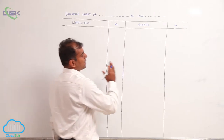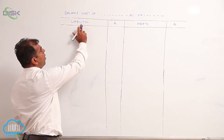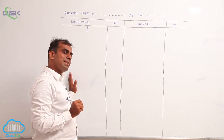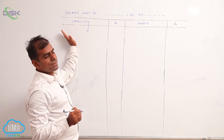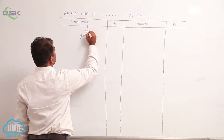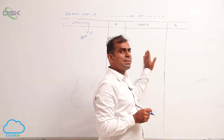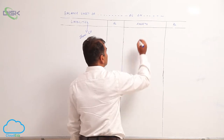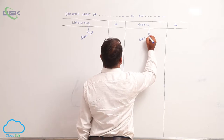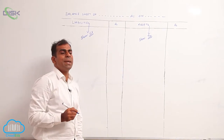In this format, there is no debit side or credit side. On the left hand side we reflect all our liabilities — this is called the liability side. Remember, liabilities show credit balance. On the right hand side, which is called the asset side, we represent all the assets. Remember, assets show debit balance.